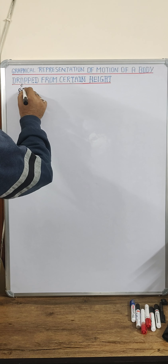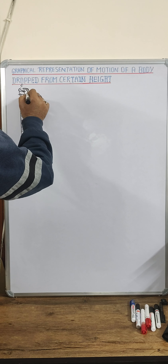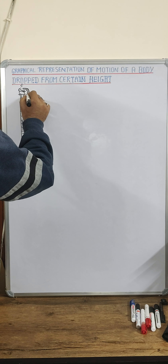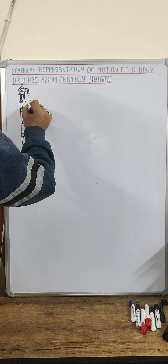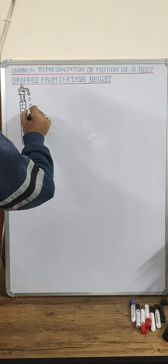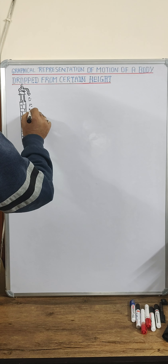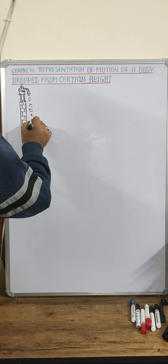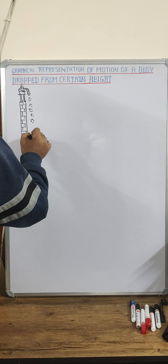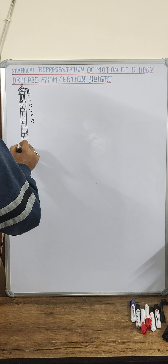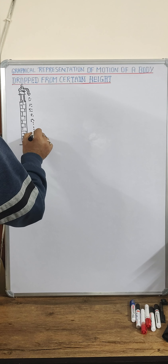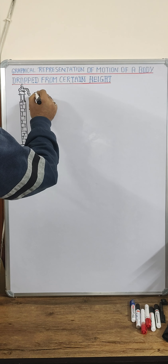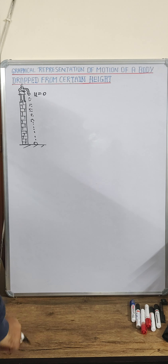Suppose a person dropped a ball downward. We know that the initial velocity must be 0. In dropping, the initial velocity of the body is 0, so u is equal to 0.